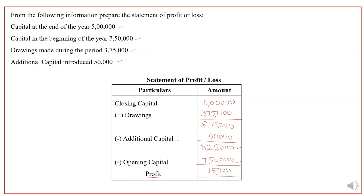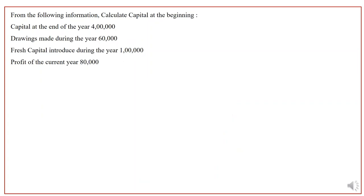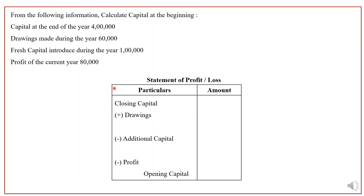The next question: from the following information, calculate capital at the beginning. Capital at the end is 4 lakhs. Drawings made during the year are 60,000. Fresh capital (additional capital) introduced is 1 lakh. Profit for the current year is 80,000. Since profit is given in the question along with closing capital, drawings, and fresh capital, we can directly prepare the statement of profit — the opening capital will be the resultant answer.